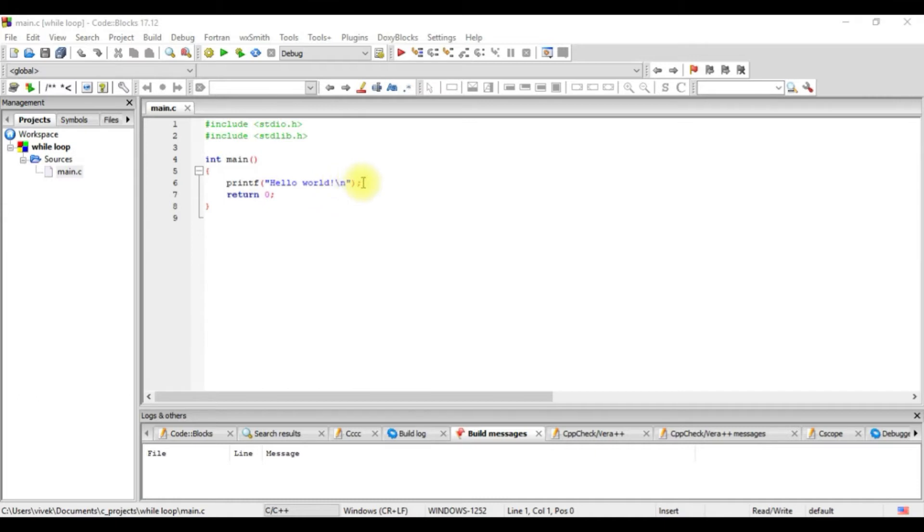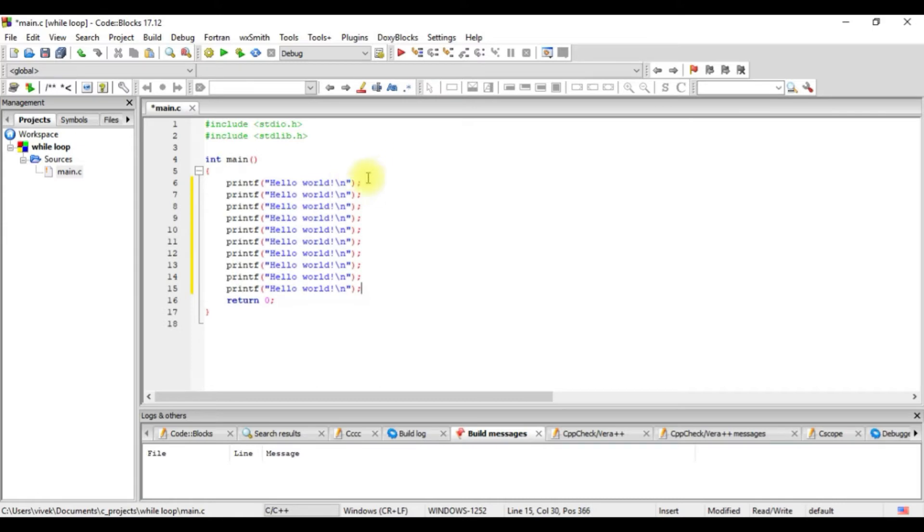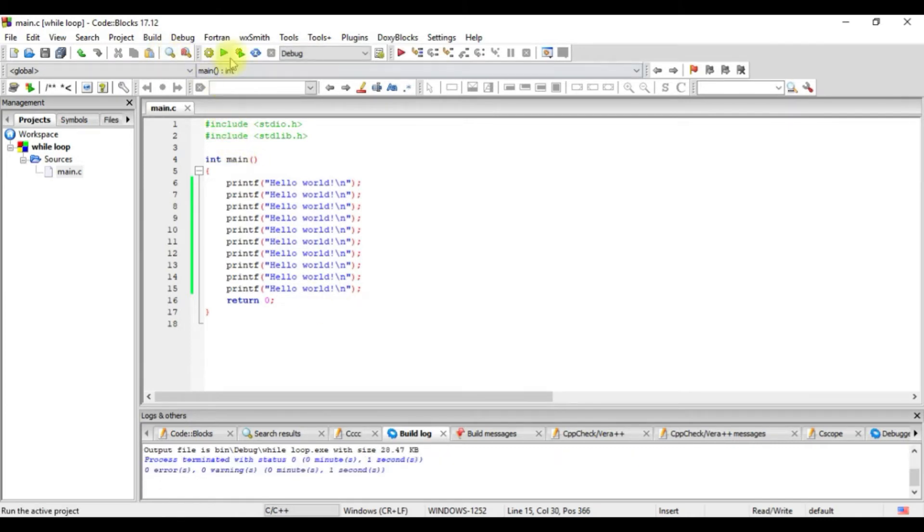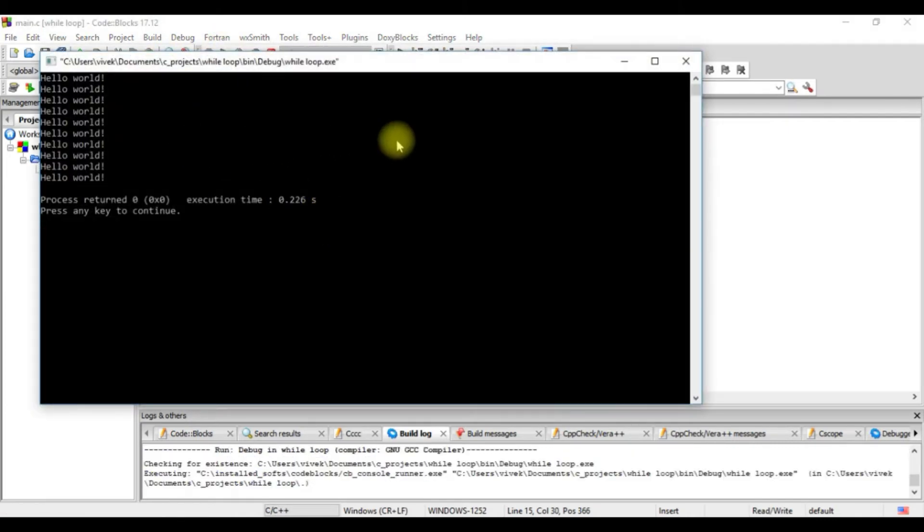Let's say we want to print it 10 times. What we would do is one way to do it is we copy it and write the same statement 10 times. So we have written it 10 times, let's build it and run it. So we see here it's executed 10 times,